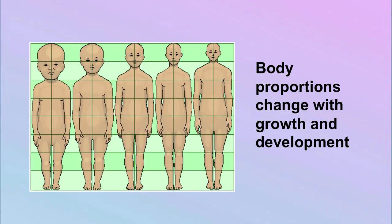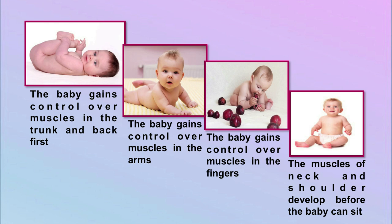Body proportions change with age. In early pictures, the head of the child is bigger and gradually becomes proportionally smaller. Overall, the baby gains control over muscles in the trunk and back first, then in the arms, then in the fingers. The muscles of neck and shoulder develop before the baby can sit. As you can see in the picture, there is a transition — first the child could only lie down, and then gradually takes control over the muscles, eventually developing neck and shoulder strength before sitting.